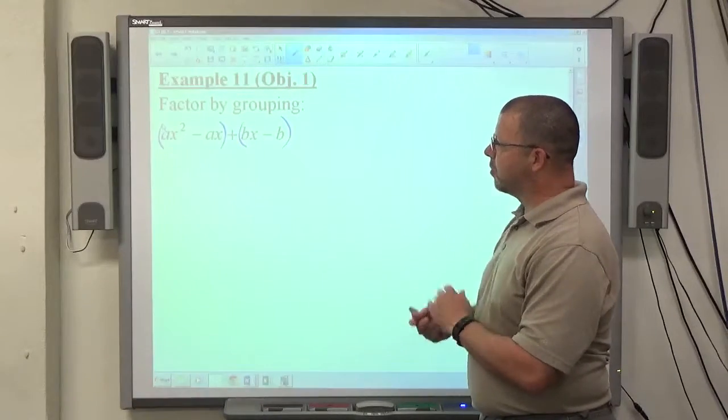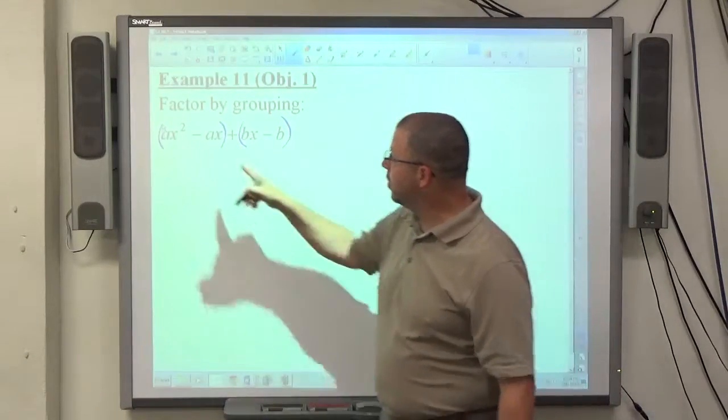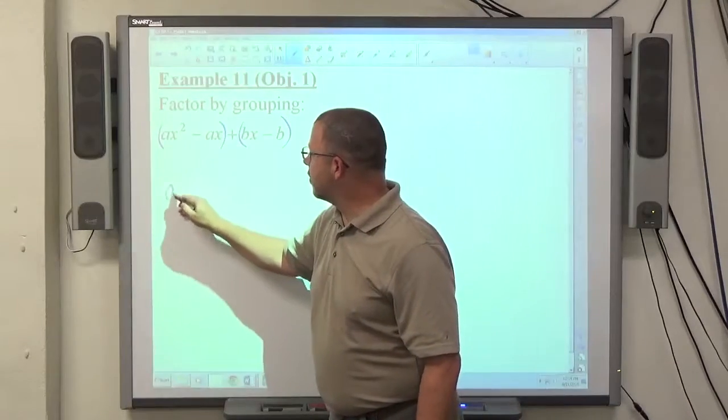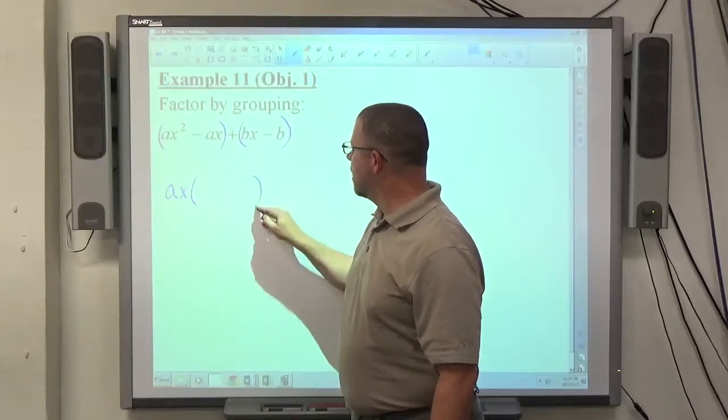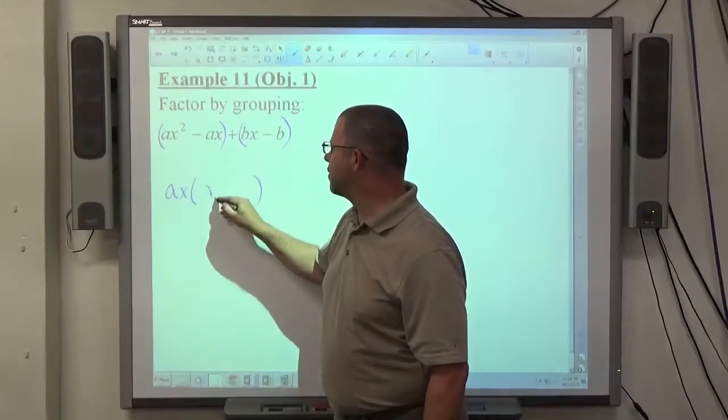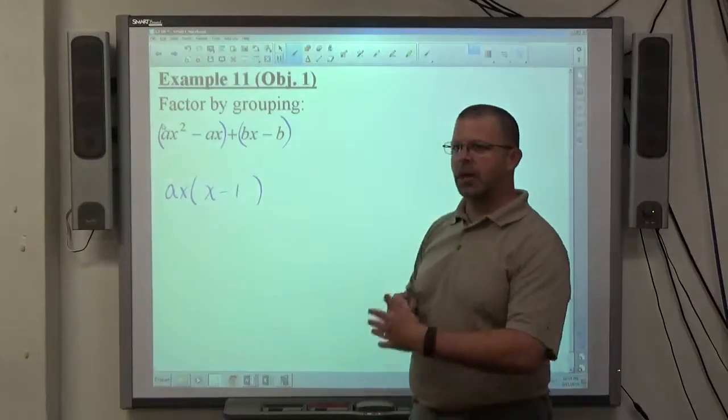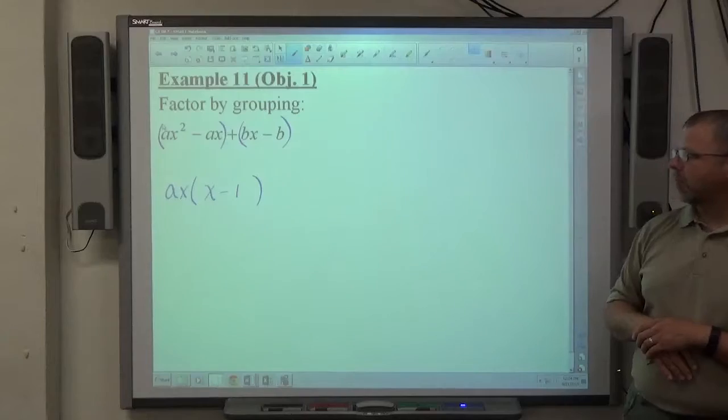ax² - ax, we're looking for a common factor within the group, and that will be ax for this first group. When I take ax out of ax² - ax, I'm left with x - 1. Remember, if you take out the entire common factor, you're left with a 1.